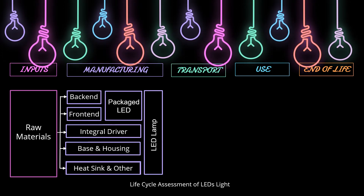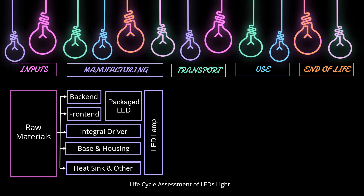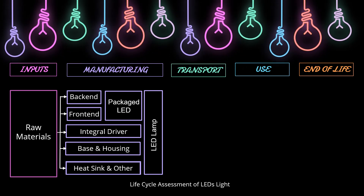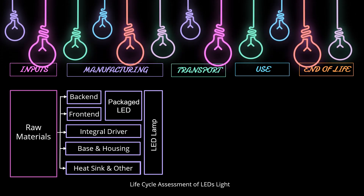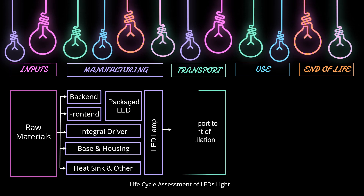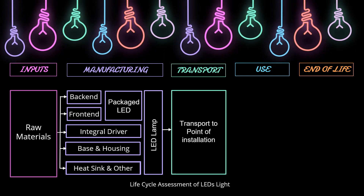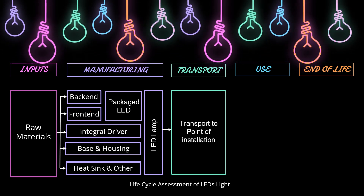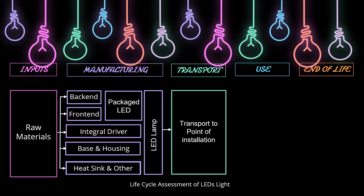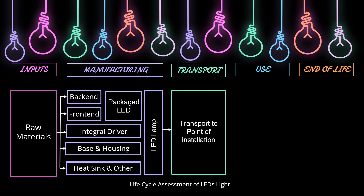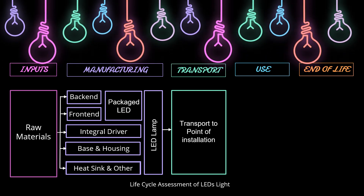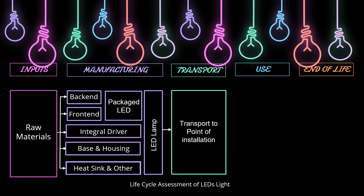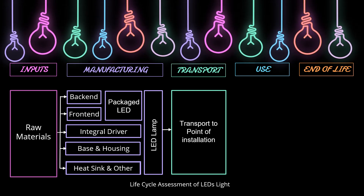The manufacturing phase takes all of the raw materials as delivered to the point of production, and accounts for the energies used and emissions associated with fabricating the lamp. All of the major component parts are depicted in the figure to highlight these component parts. The distribution phase covers the transportation of the product from its point of manufacture to its point of installation and use. For many products, transport and distribution form a small part of the overall environmental footprint. Impacts from distribution tend to be more significant if the product needs to be refrigerated, which isn't the case for lighting products.